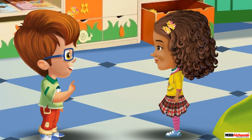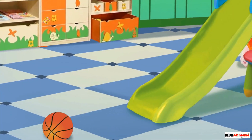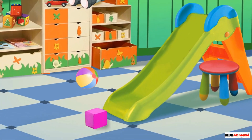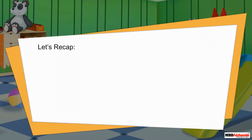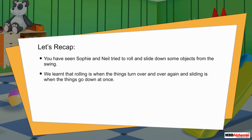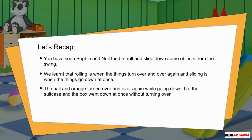That's an interesting question. What is the difference between rolling and sliding? Why did the box and the suitcase slide down, but the ball and the orange rolled down? Rolling is when things turn over and over again, and sliding is when things go down at once. The ball and orange turned over and over again while going down, but the suitcase and the box went down at once without turning over.